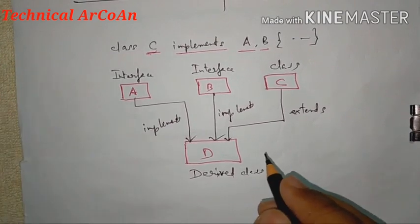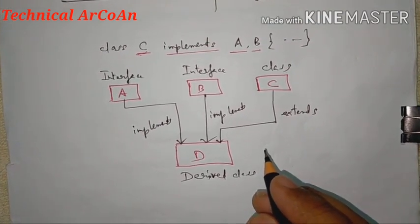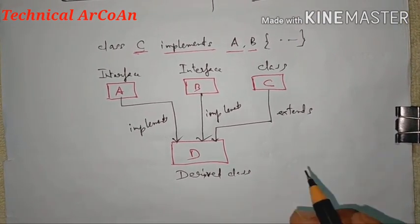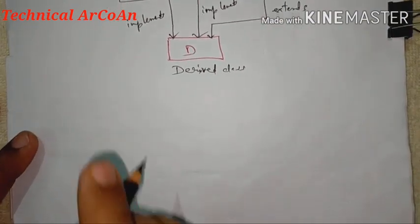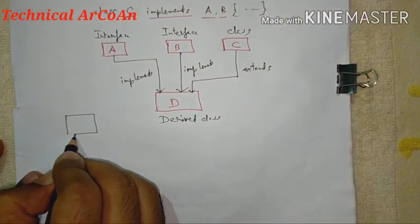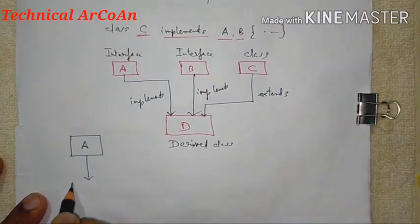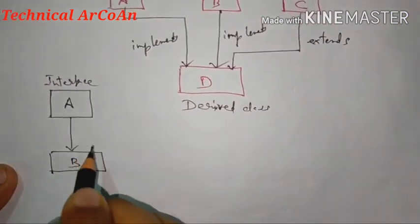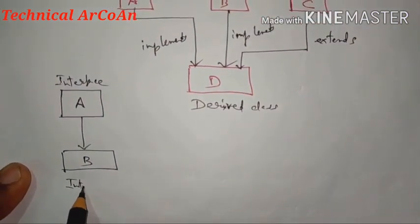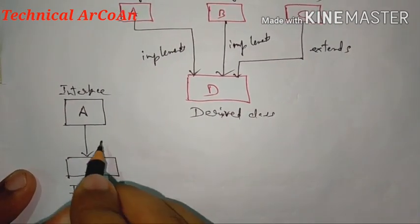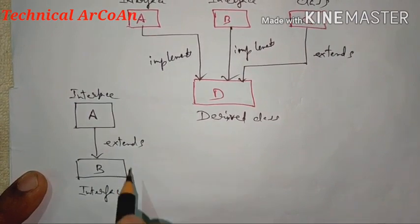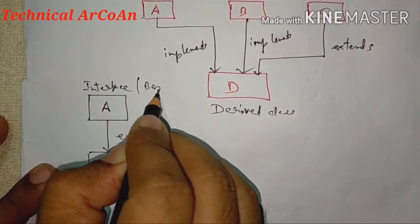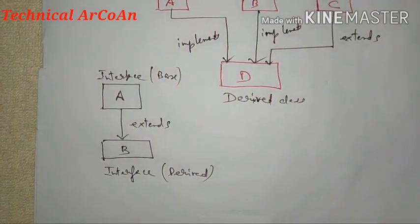Point three: an interface can extend another interface, in the same way a class can extend another class. So if A is an interface, it can be derived within another interface using the extends keyword. This makes the new interface the derived interface and A the base interface.